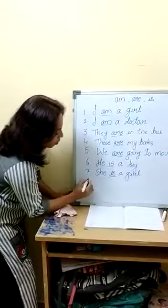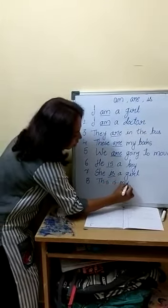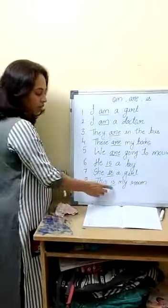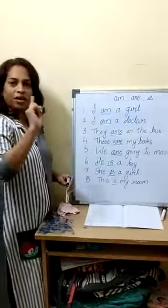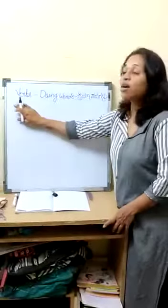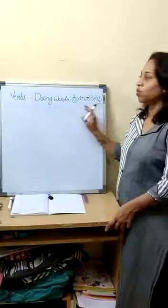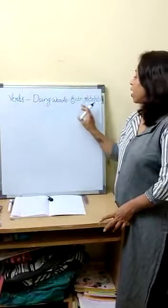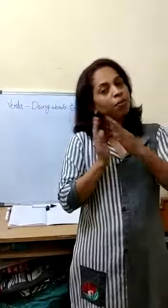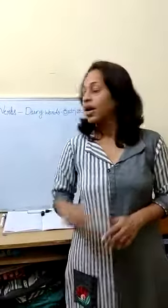One more example for is: This is my room. Now after am, are, and is, we will see the verbs. Verbs means doing words — in Kannada, Kriyapadagalu. Doing words means: I am eating, I am sleeping, I am standing, I am sitting. These are the words we call verbs.